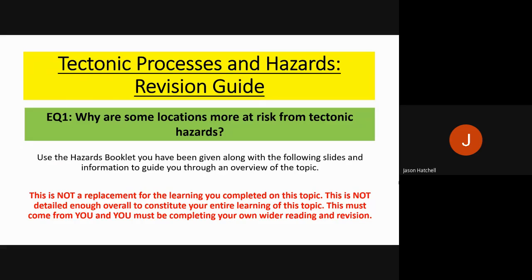Tectonics and hazards as a topic overall is worth only 16 marks of your entire A-level course. It's a very large topic to learn, but you're not asked a lot on it. So you need to have a good overview of knowledge of this topic so that you can apply and choose some different case studies for the questions you might be asked.